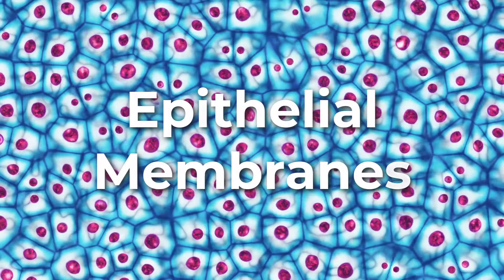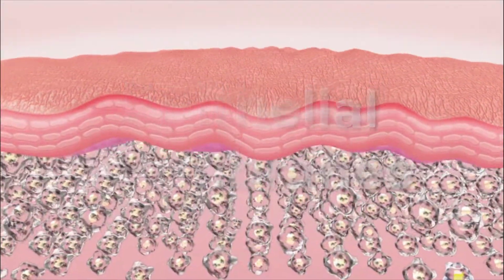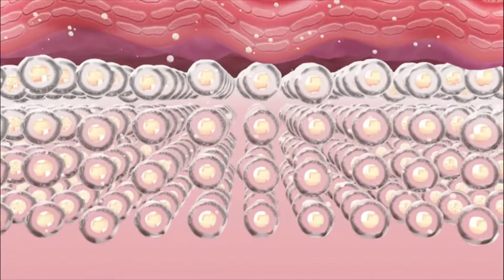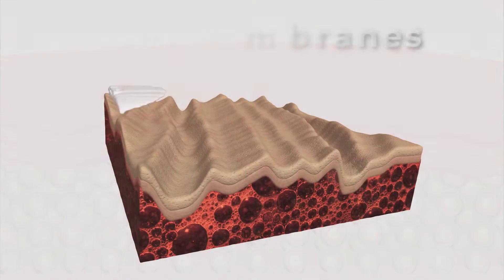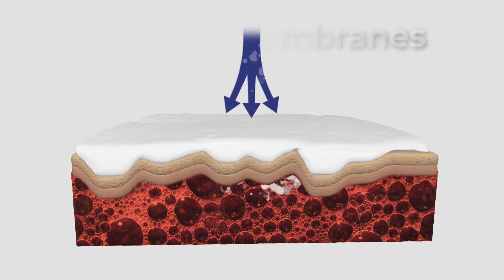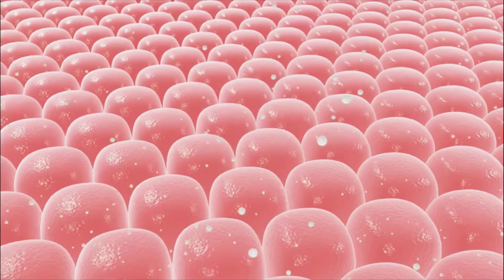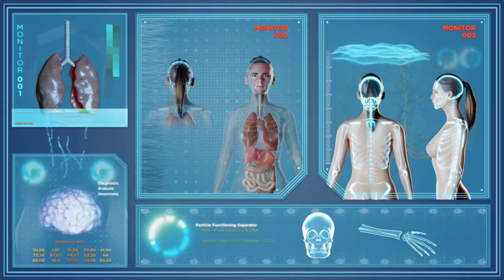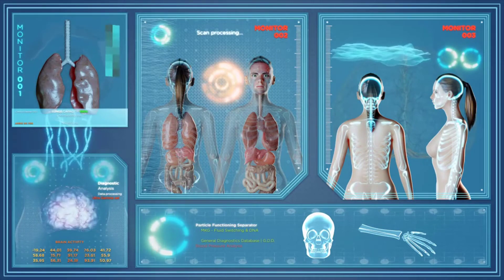The epithelial membrane is composed of epithelium attached to a layer of connective tissue. The mucous membrane is also a composite of connective and epithelial tissues. Sometimes called a mucosa, these epithelial membranes line the body cavities and hollow passageways that open up to the external environment. This includes the digestive, respiratory, excretory, and reproductive tracts.